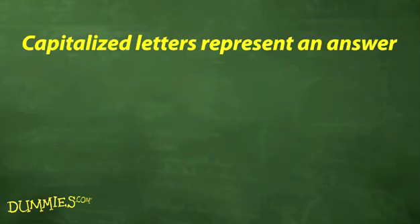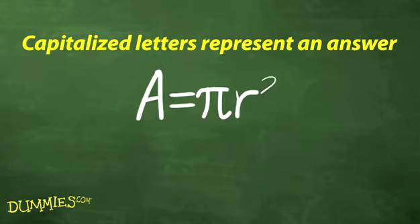while capitalized letters are used most commonly to represent the answer in a formula, like the capital A for area of a circle equals pi times the radius squared, or A equals pi r squared.